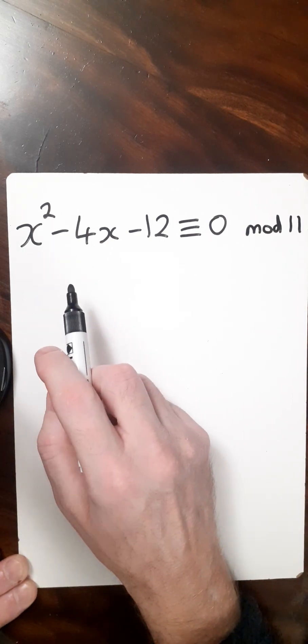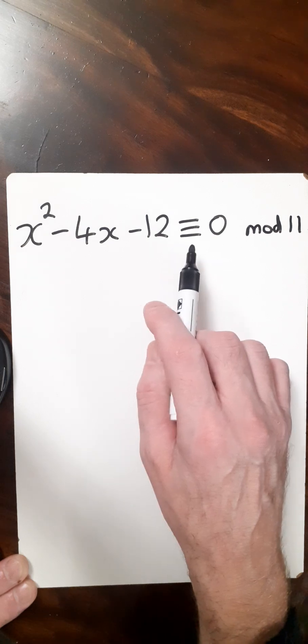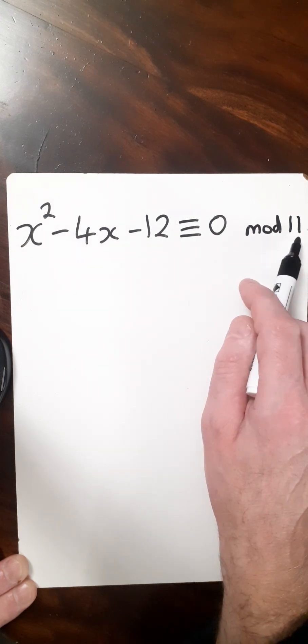Here we've got a quadratic equation with a difference. We've got x² - 4x - 12 ≡ 0 (mod 11).